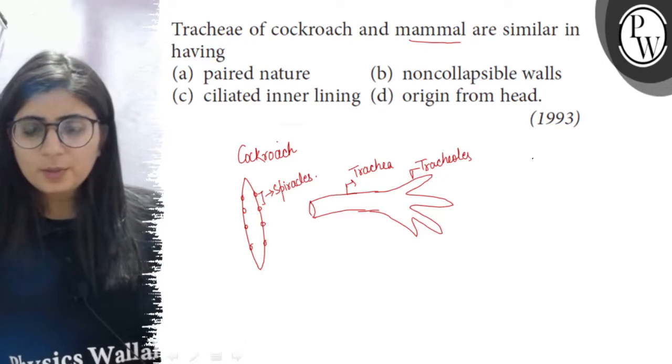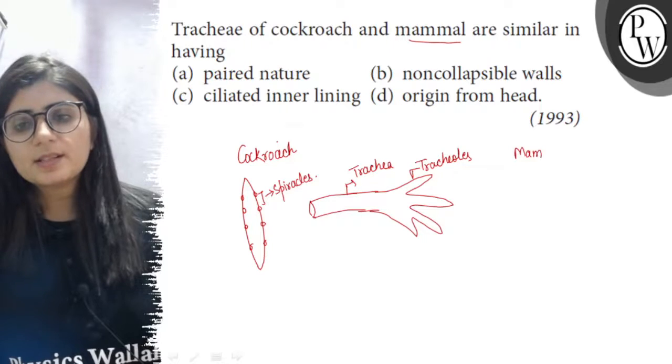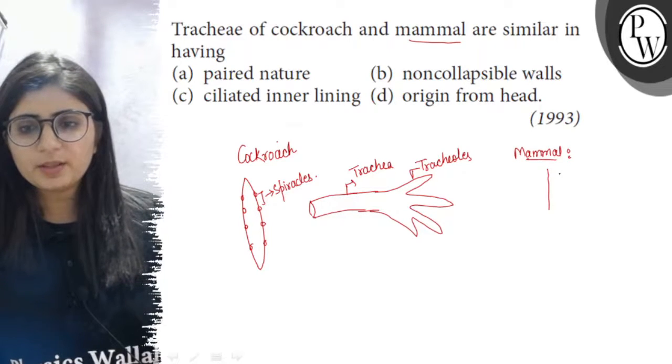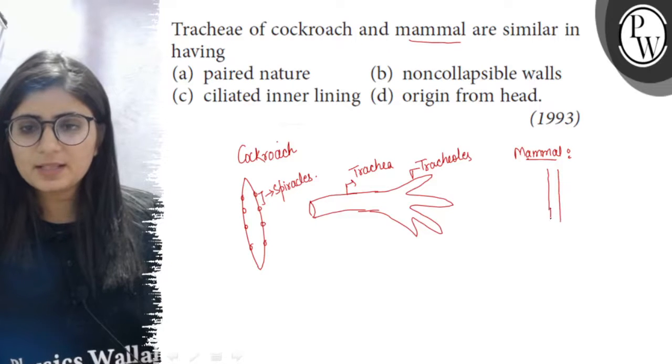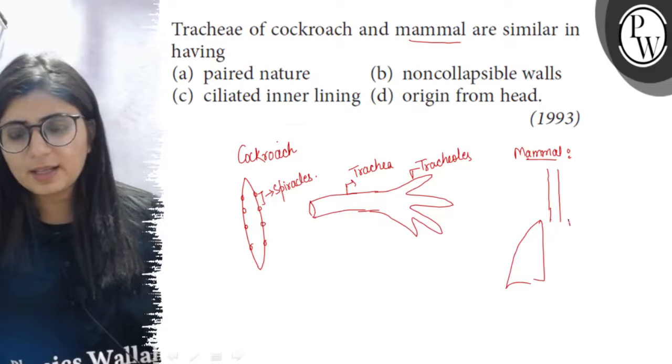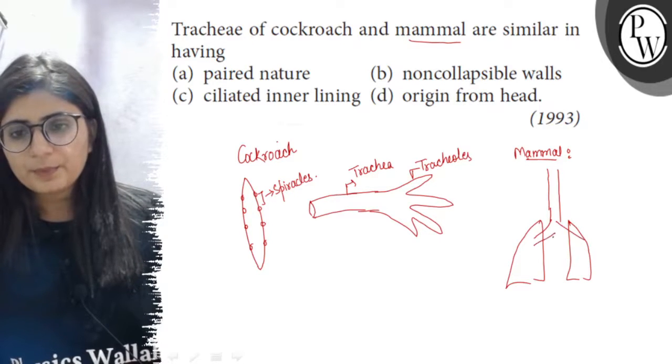In mammals also there is the windpipe which is known as trachea, which extends from the larynx and reaches up to the lungs where they get divided to form the bronchi, the primary bronchi.